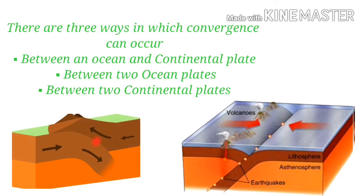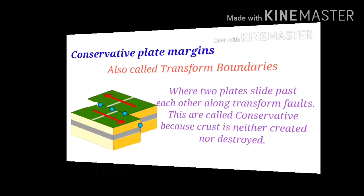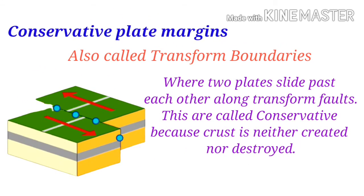There are three ways in which convergence can occur: between an oceanic and continental plate, between two oceanic plates, and between two continental plates. Transform boundaries are where two plates slide past each other along transform faults.